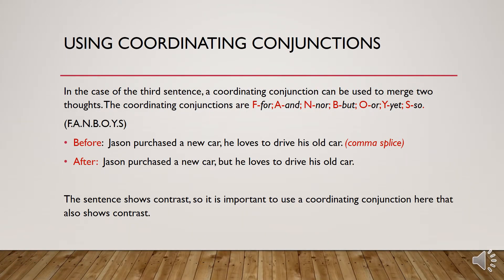In the case of the third sentence, a coordinating conjunction can be used to merge two thoughts. The coordinating conjunctions are for, and, nor, but, or, yet, so — or FANBOYS. Before: 'Jason purchased a new car, he loves to drive his old car.' We wouldn't use a semicolon here because the first independent clause doesn't lead directly to the second. After, we add a coordinating conjunction and a comma: 'Jason purchased a new car, but he loves to drive his old car.' This sentence shows contrast, so it's important to use a coordinating conjunction that also shows that contrast.